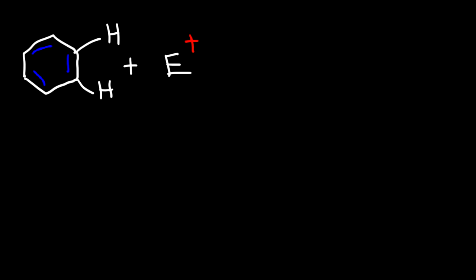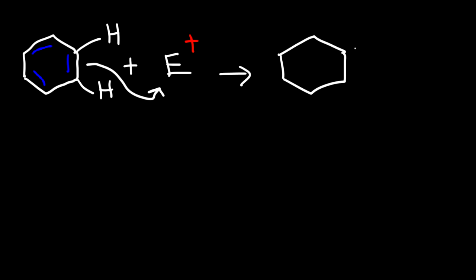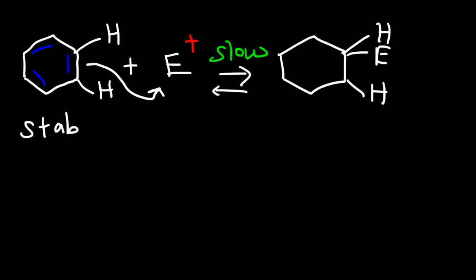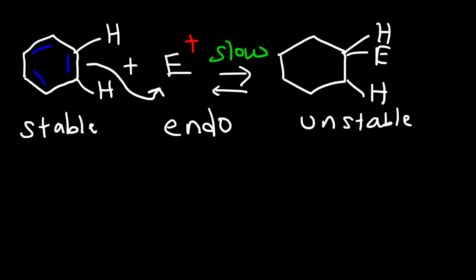So let's talk about the general mechanism for these reactions. Here we have benzene, and we're going to react it with an electrophile. The first thing that's going to happen is the benzene ring is going to behave as a nucleophile attacking the electrophile. The first step is an addition step and this step is very slow because the benzene ring is losing its aromaticity, going from a stable compound to an unstable compound. This first step is an endothermic step because we're going from a molecule with low energy to a molecule of high energy.